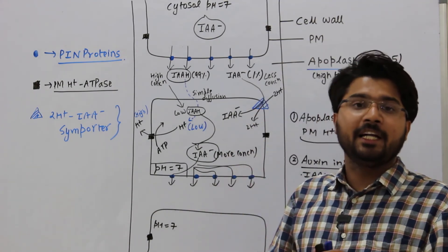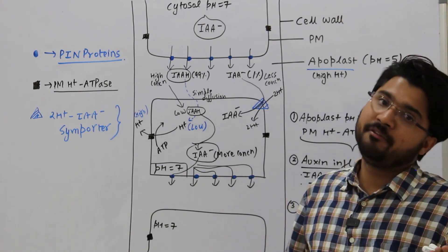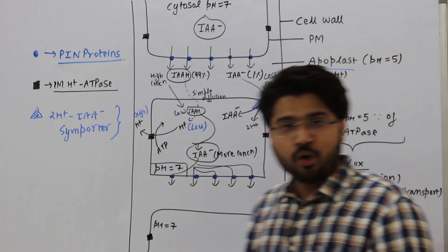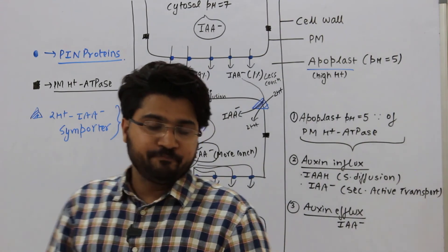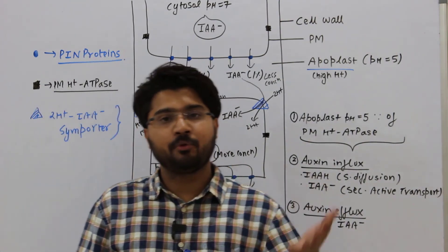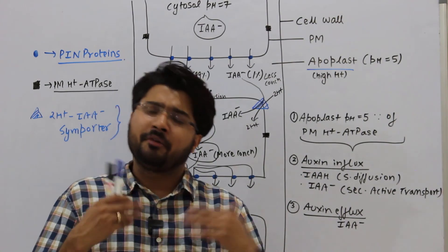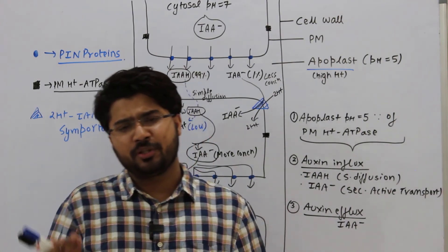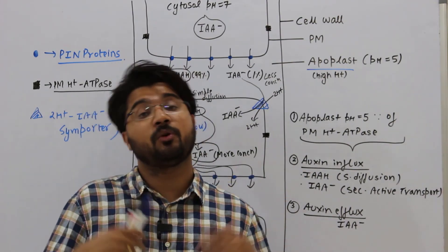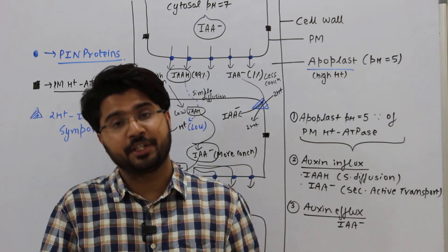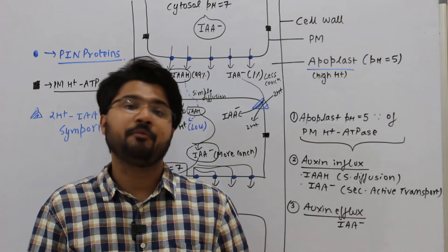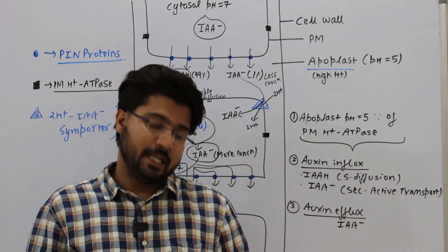The term symporter is used because 2H⁺ and IAA⁻ move in the same direction (sym = same). An antiporter would be if they moved in opposite directions. That is all for the chemiosmotic model. We will soon understand the role of PIN proteins and PGP in transport and homeostasis. Thank you for your patience and good evening.